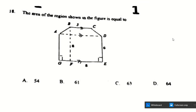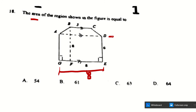For the next question, it says the area of the region shown in the figure below. There are two regions: the lower one is a rectangle with length 8 and width 6. The whole height from top to bottom is given as 8.